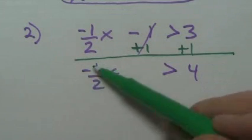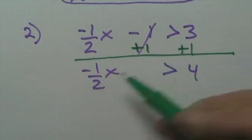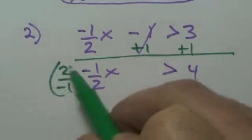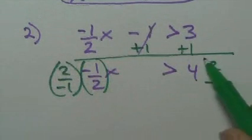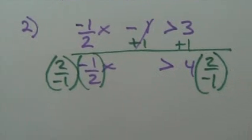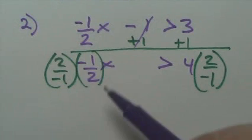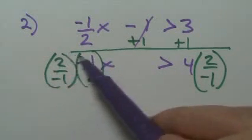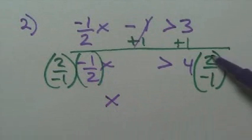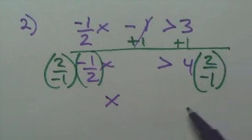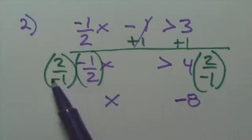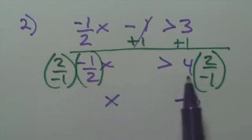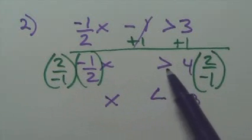Next, I have a fraction here. I can just use the reciprocal to get rid of it, which is two over negative one. All of this cancels out and leaves you with just x. On the other side, four times two is eight, and there's one negative. Wait — we multiplied both sides by a negative, two over negative one. Therefore, we need to reverse the arrow.